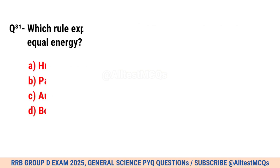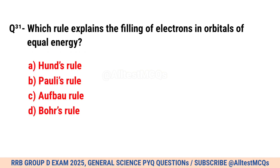Question No. 31. Which rule explains the filling of electrons in orbitals of equal energy? Correct option is A. Hund's rule.